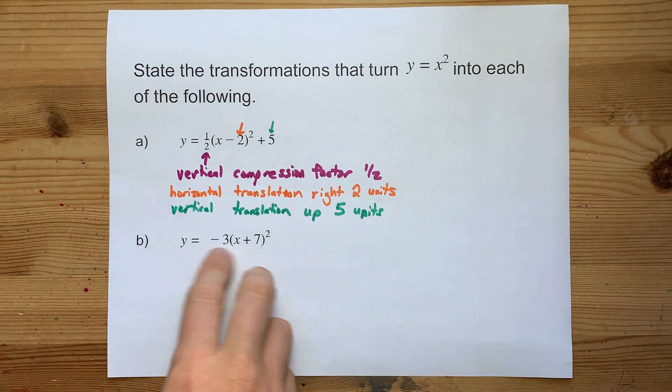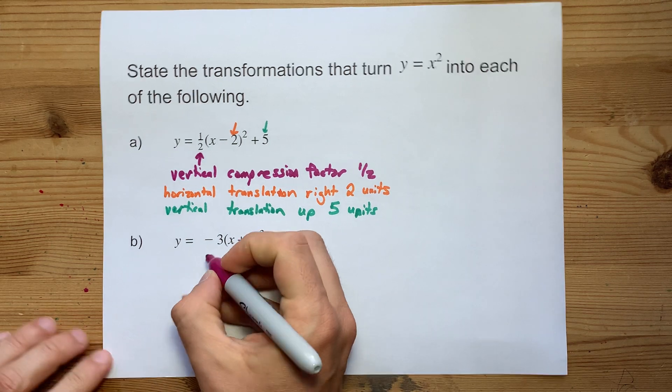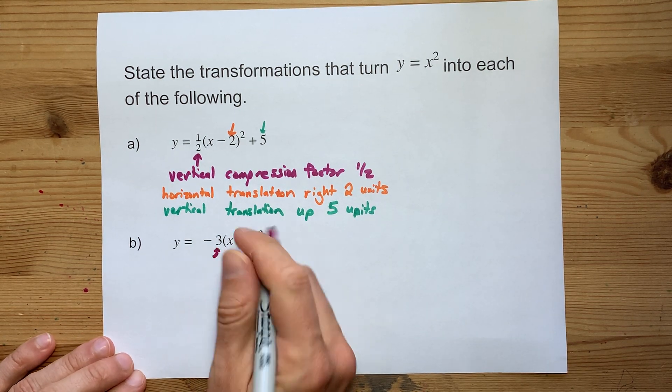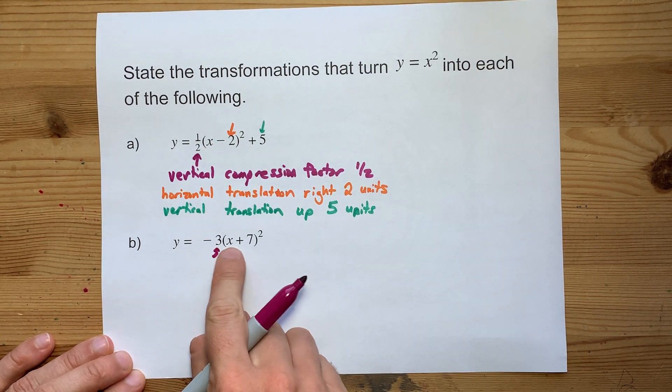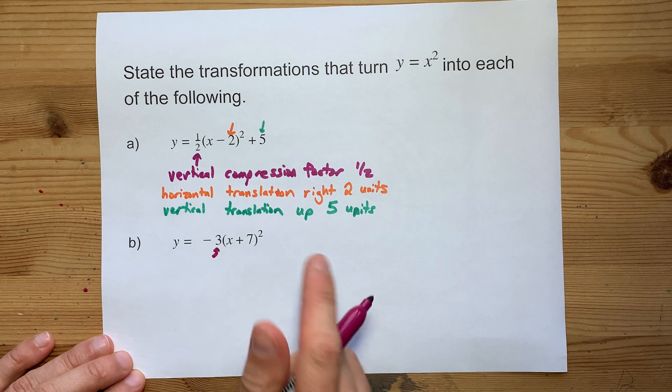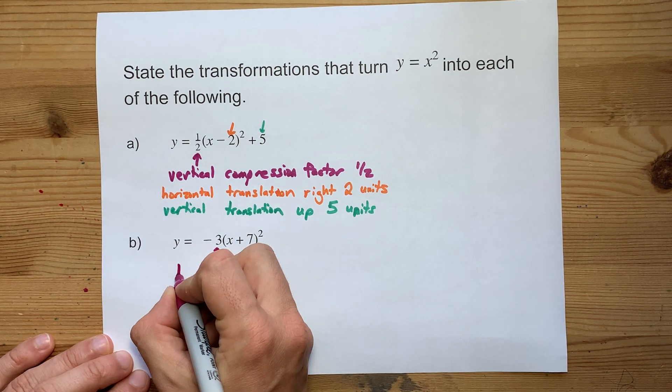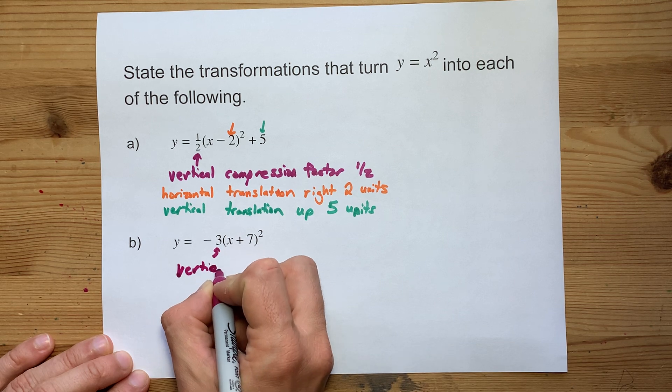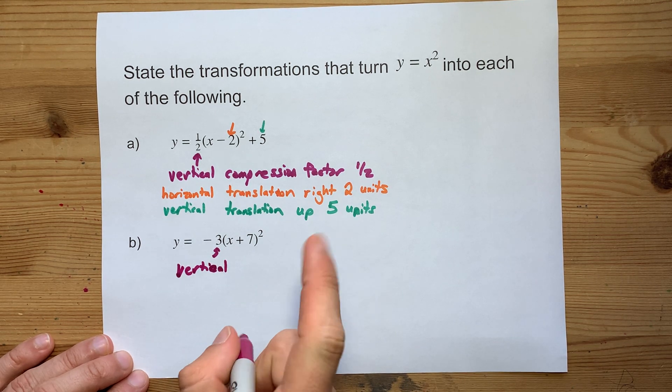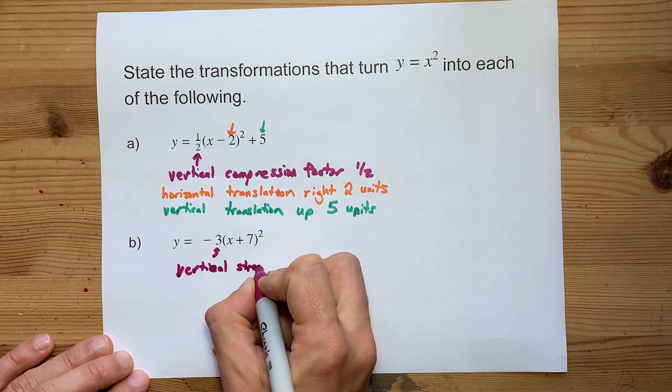Shall we do it one more time? Yes, let's. Now, this 3 is multiplied by the x. It is eventually squared. It is a vertical. Oh, this one is bigger than 1. So it must be a stretch.